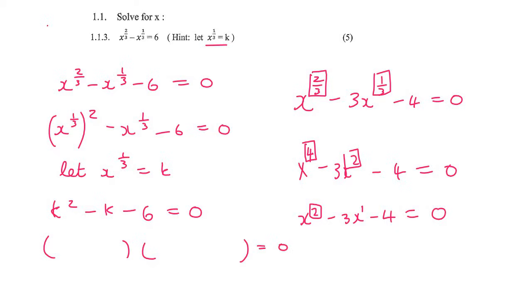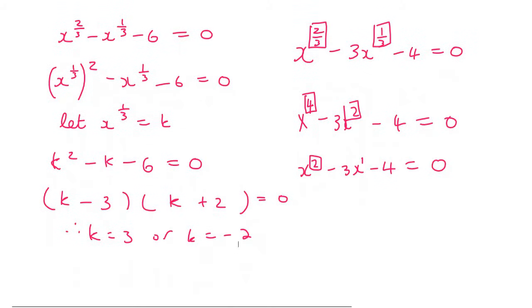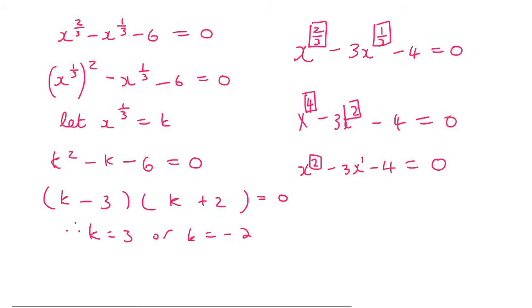Which will just be (k-3)(k+2). And so therefore, k would be equal to 3 or k would be equal to -2. But now that's not the answer. That's the answer for k, but we want the answer for x.